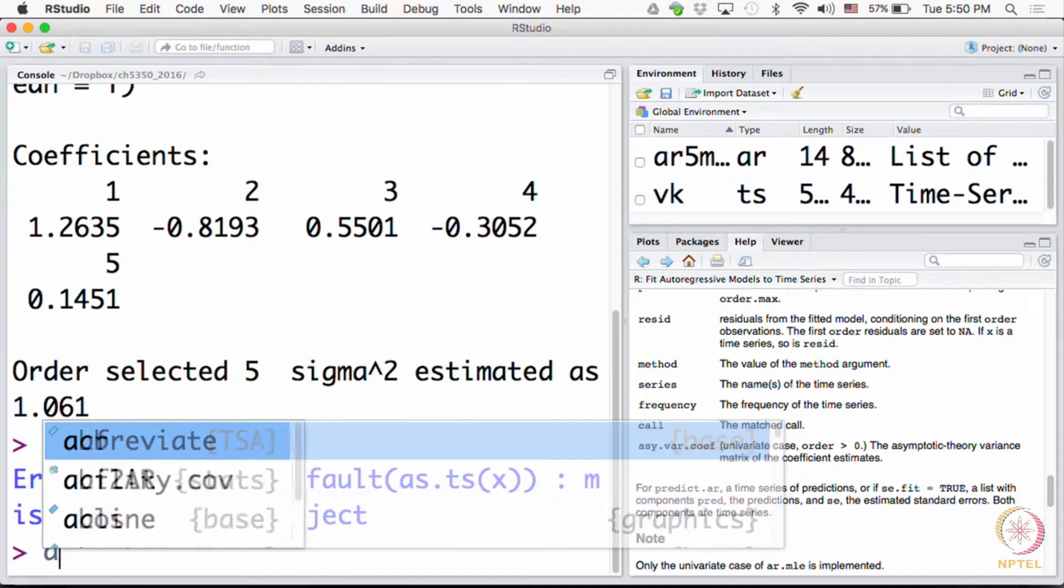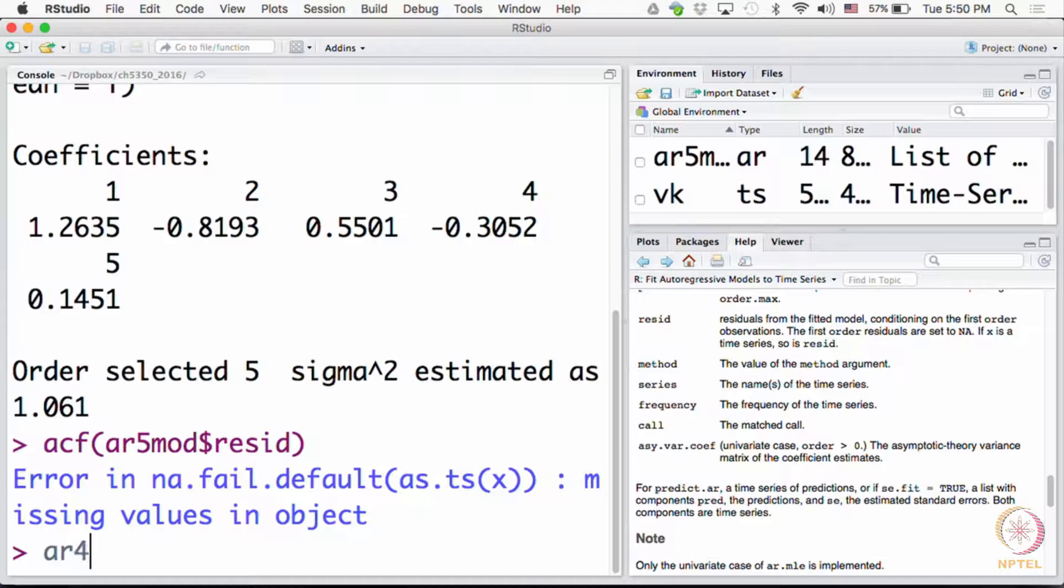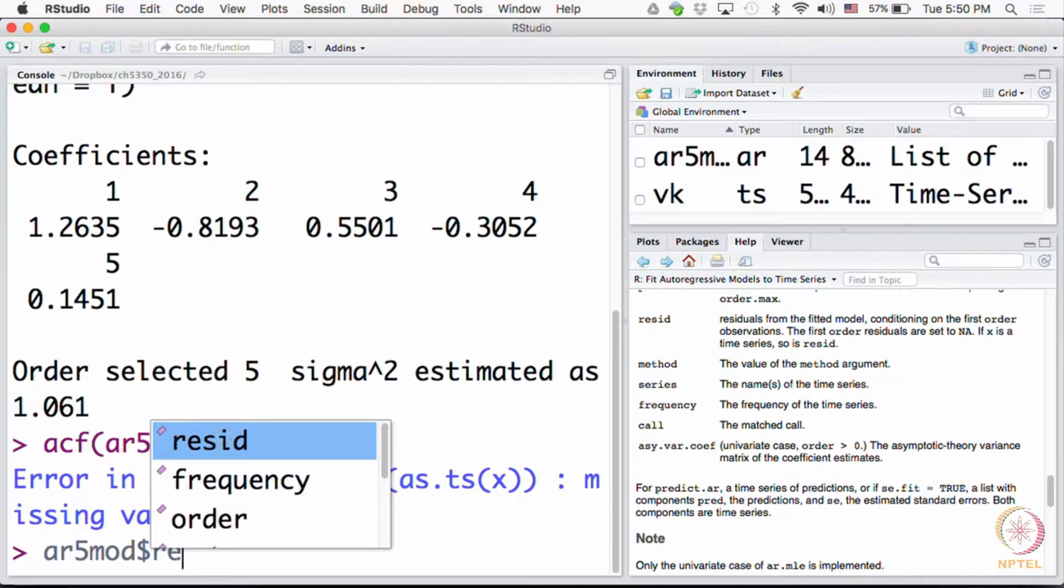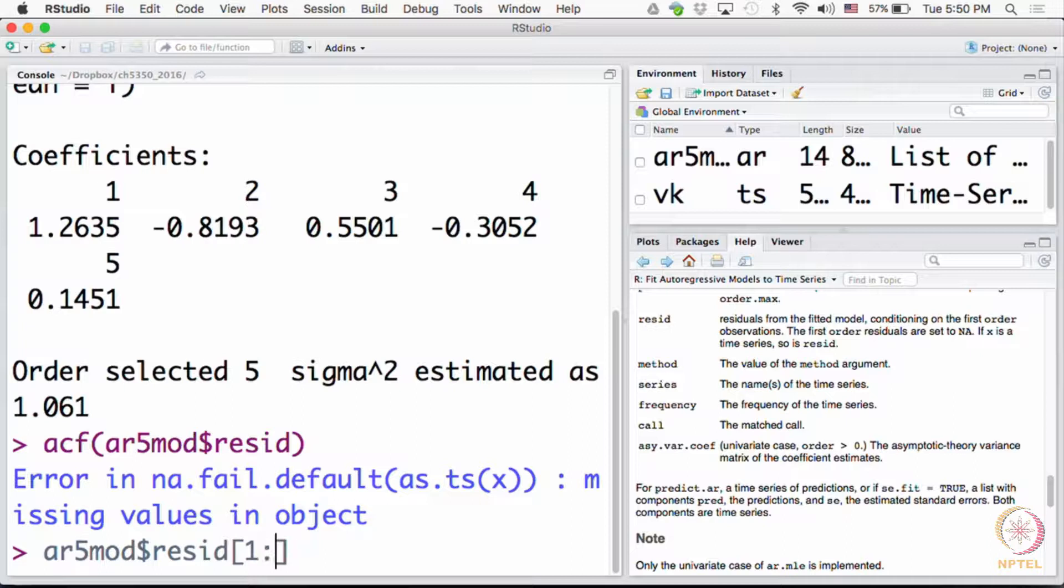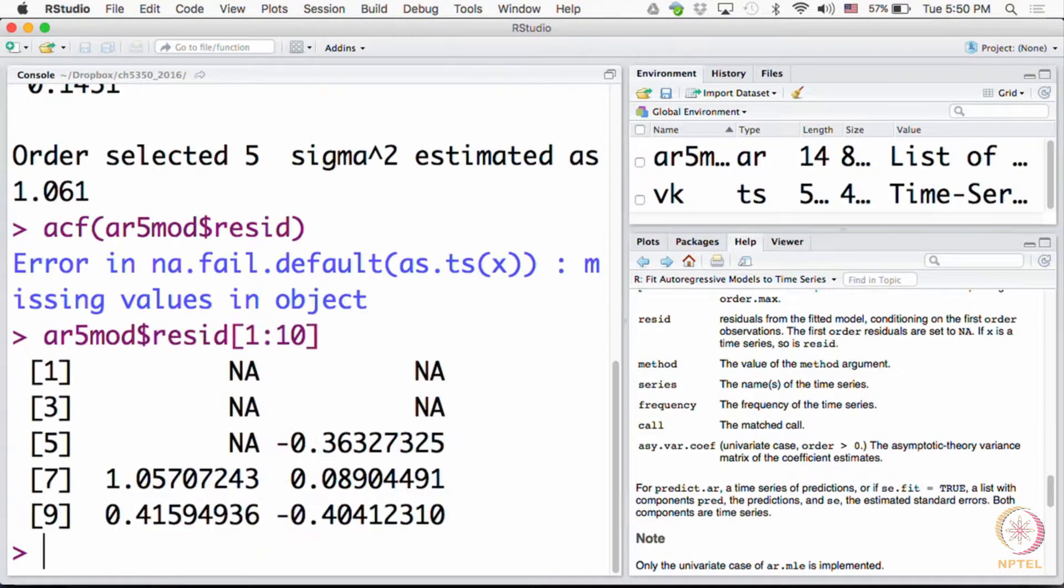Let's ask for the first 10 observations. Oh oh. So there are quite a few missing values. How many do we have? Five. Why? Why are they not available? This is the story. That's why one should know first the theory and then also the practice.